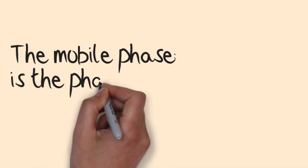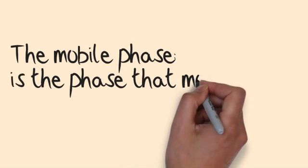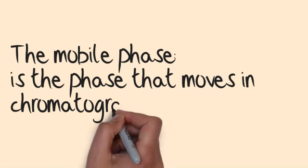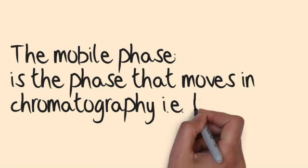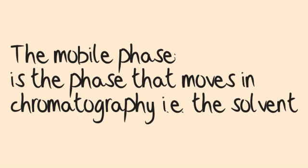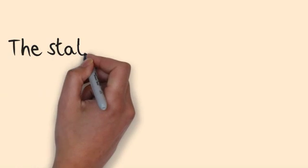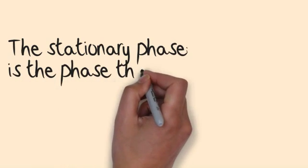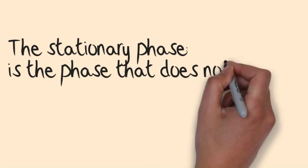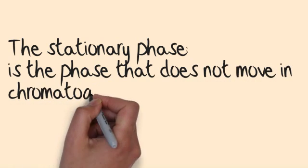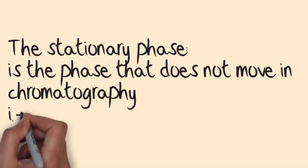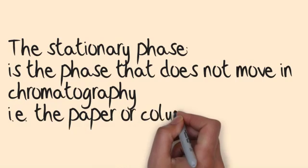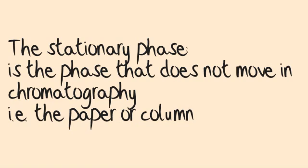The mobile phase is the phase that moves in chromatography, i.e. the solvent. The stationary phase is the phase that does not move in chromatography, i.e. the paper or the column.